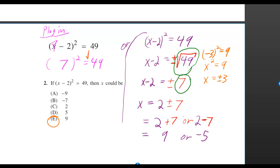And that means 2 plus 7 or 2 minus 7. 2 plus 7 is 9, 2 minus 7 is negative 5. So negative 5 would have been an answer as well.